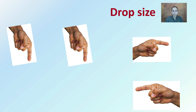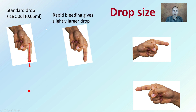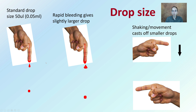Looking at droplet size comparisons: we have a standard drop of about 100 microliters, or 0.05 milliliters. Then we have rapid bleeding that gives a slightly larger drop, as we see here. There's a noticeable difference when comparing the two. We also have shaking movements that cast off smaller drops, as seen here. Droplet size can be impacted by the volume and also the method by which it falls.